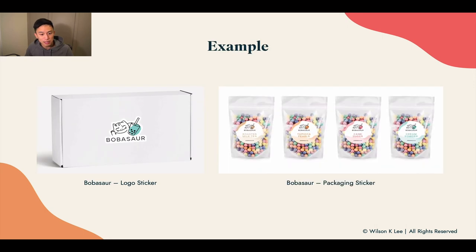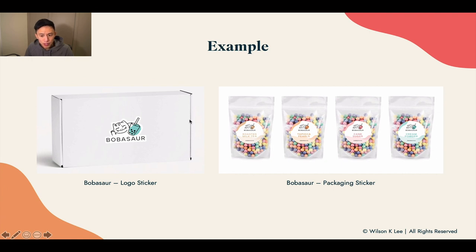As an example, this is the Bulbasaur case study that we created just to showcase to you. This is a box that we bought off the shelf, and this is only a sticker that we printed and slapped on it to add a little bit more of our branding. Same with these pouches — we bought these pouches off the shelf on Amazon, and we basically just printed more stickers to slap on to really give that feeling of a branded packaging and food concept.